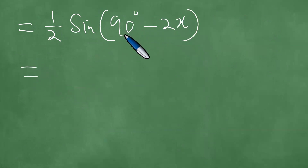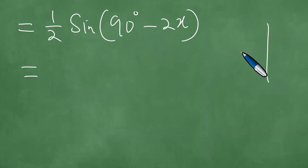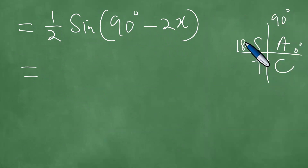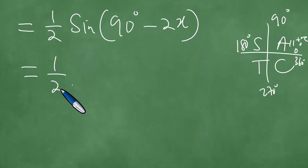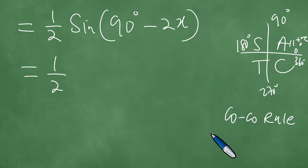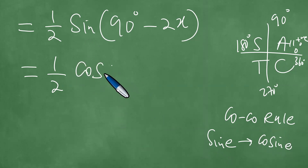Now, this angle 90 degrees minus 2x is in quadrant one. In the first quadrant, using the CAST diagram where you have 0 degrees, 90 degrees, 180 degrees, 270 degrees, and 360 degrees — the A stands for all positive. All trigonometric functions are positive between 0 and 90 degrees. Using what we call the co-co rule, we are able to convert the sine to the cosine function, so that here we indeed have the cosine of twice x.